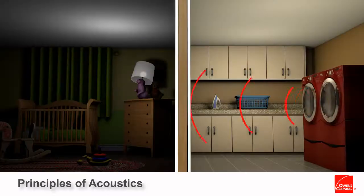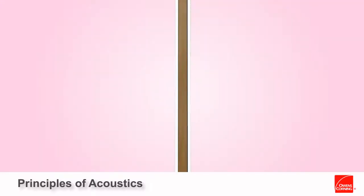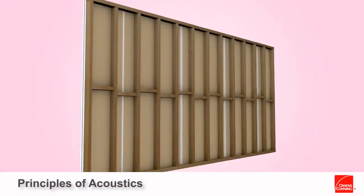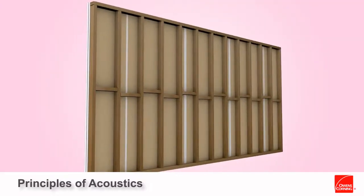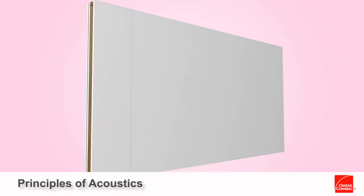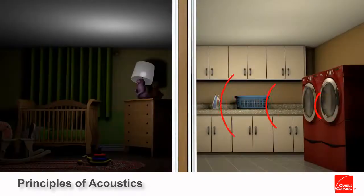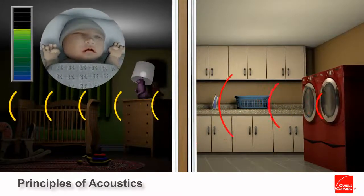The first principle is blocking, which describes the importance of the partition's ability to provide a membrane or sheathing to block the sound path. This means making sure gaps and cracks are sealed with acoustical caulking or gasketing, allowing the sheathing, such as gypsum board, to form a continuous barrier. One of the most important elements of blocking is to increase the mass of the gypsum board, thereby improving its noise control characteristics.